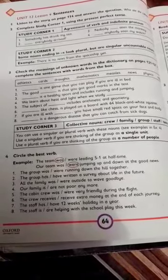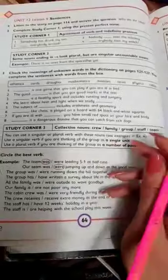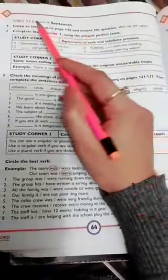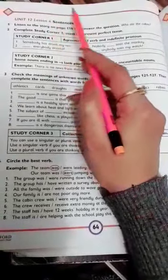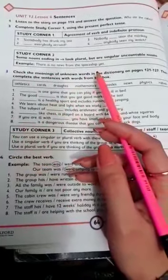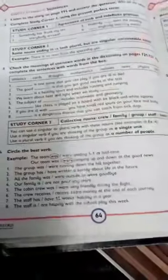This time we are going to do Lesson 4, which is on page 64. You are required to open page 64 of Oxford Progressive Work, Unit 12, Lesson 4. We are going to do Exercise 3 and Exercise 4 from this unit.